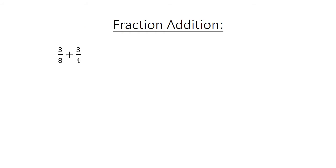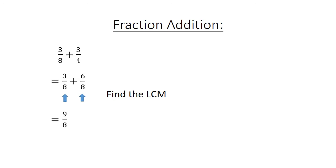Fraction addition. 3 over 8 plus 3 over 4. Find the lowest common multiple. 3 over 8 plus 6 over 8 equals 9 over 8, which equals 1 and 1 over 8.